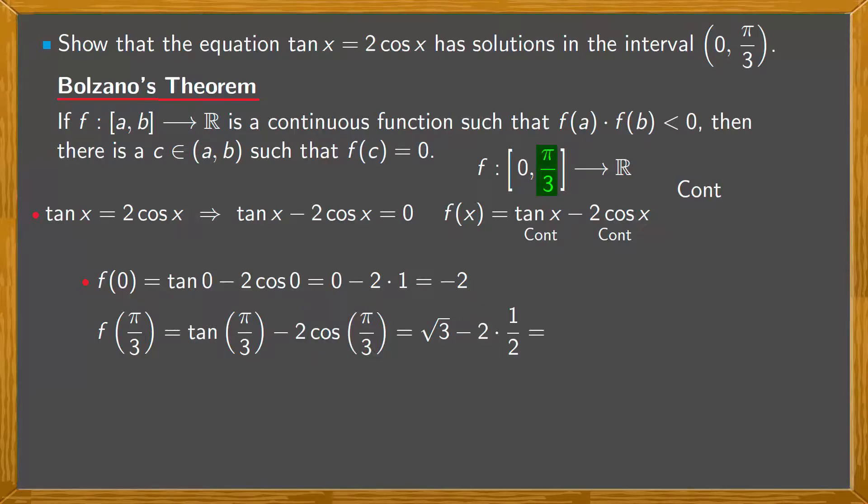So we're left with √3, which is approximately 1.73, minus 2 times 1/2, which is 1, giving us 0.73.